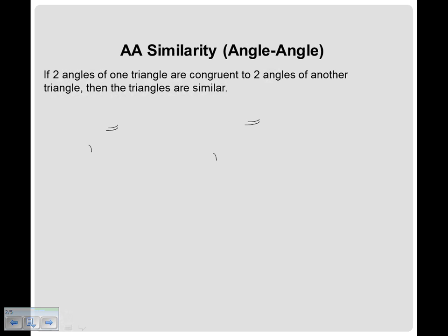All you have to do is say, if two angles of one triangle are congruent to two angles of another triangle, then the triangles are similar. And that's all you need. Two pairs of angles that match up.